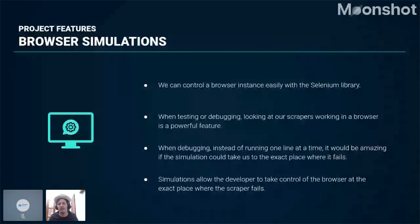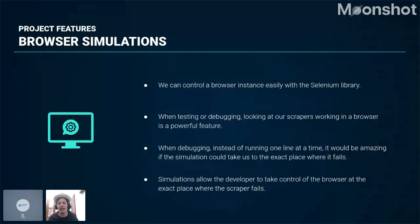We implemented this so that instead of running one line at a time from the command line, we can run the entire script inside a browser simulation. This is especially useful when a scraper is broken and we don't know where it fails — instead of going line by line, we can run a simulation and take control at the exact moment it fails, saving time when fixing broken scrapers and deploying them to production.